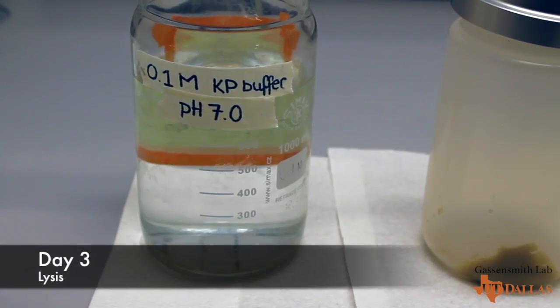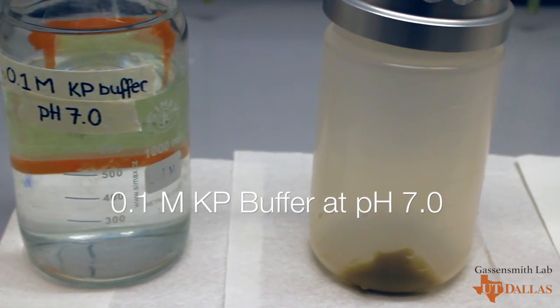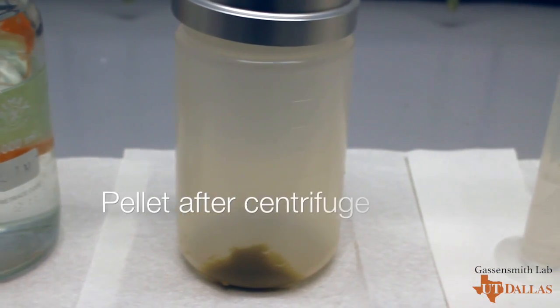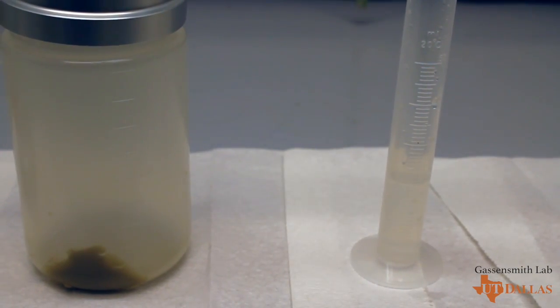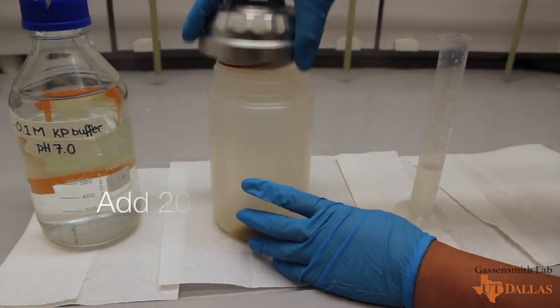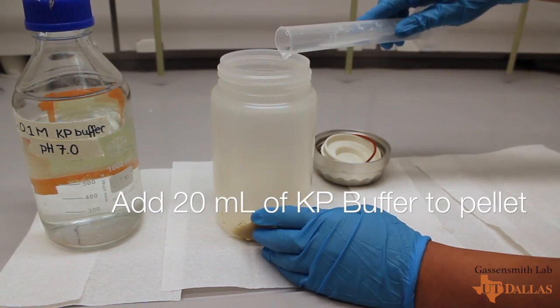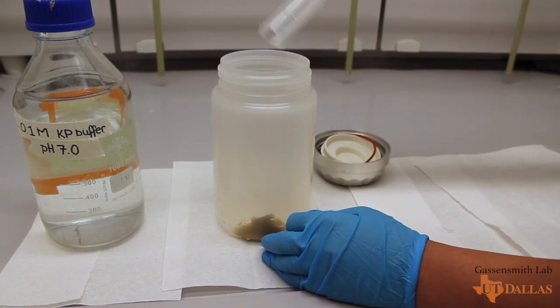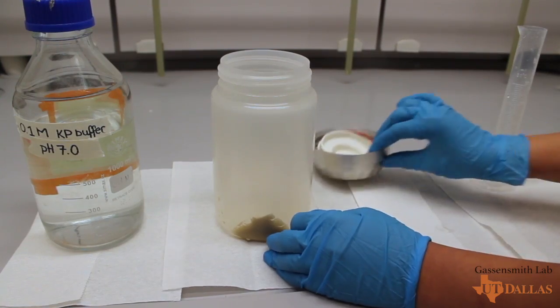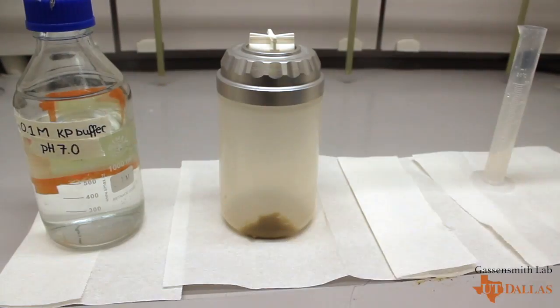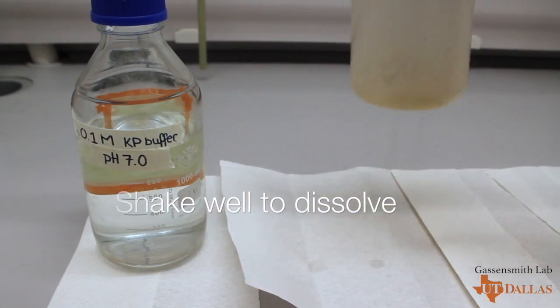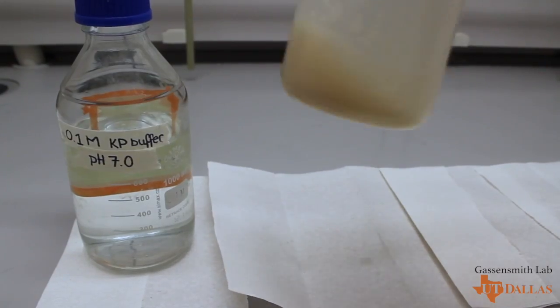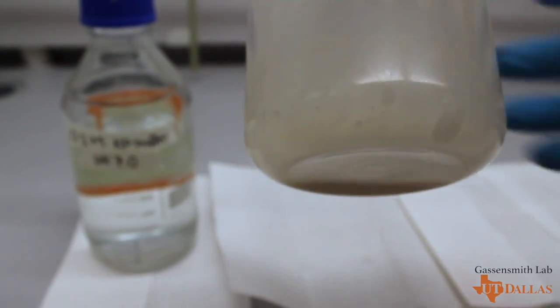The next step is to lyse the cells. To do this, we need potassium phosphate buffer, the pellet from the previous step, and a graduated cylinder. Measure out 20 milliliters of KP buffer and add it to the pellet. Shake the bottle to dissolve the pellet. Once done, pour into a centrifuge tube.